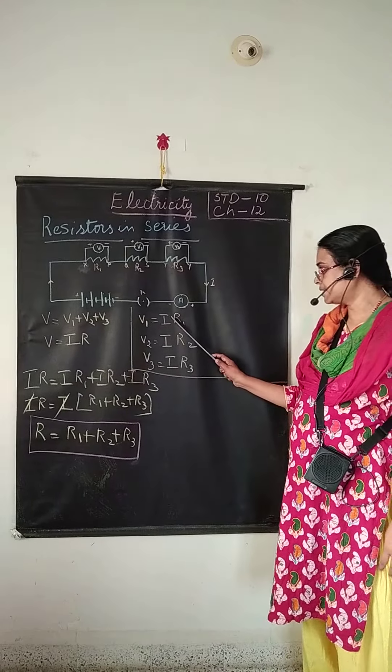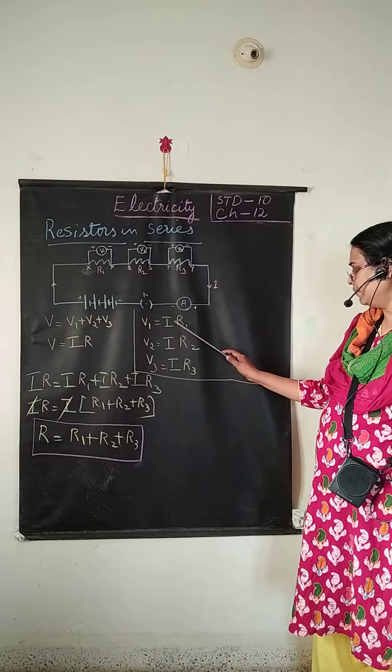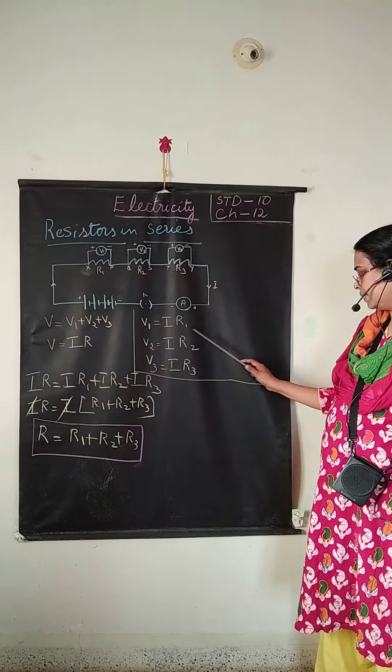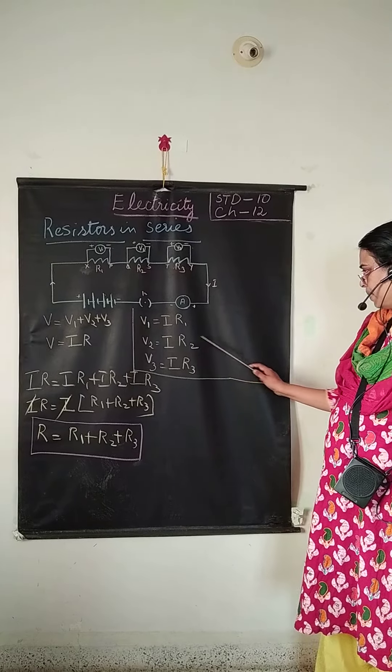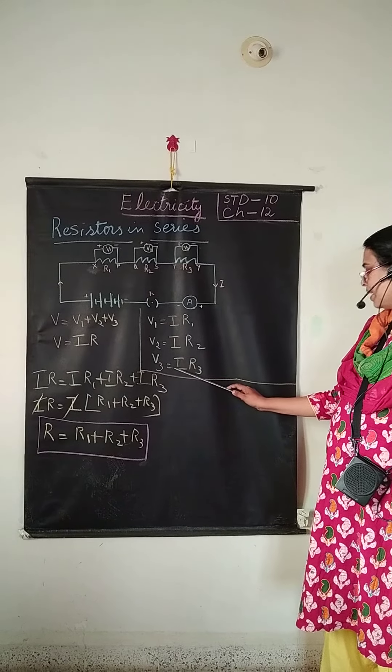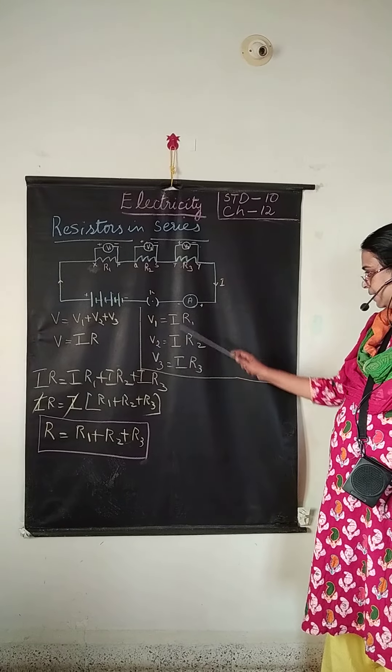I is constant. V1 is equal to I into R1. V2 is equal to I into R2. V3 is equal to I into R3. Since the current is constant.